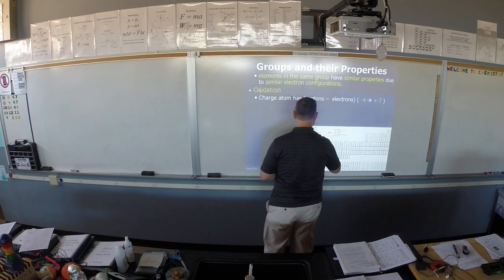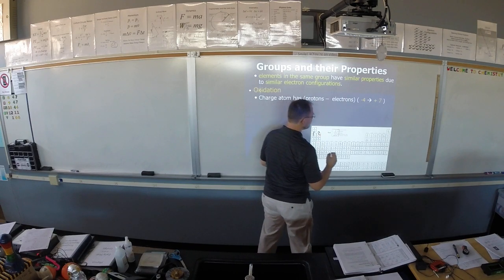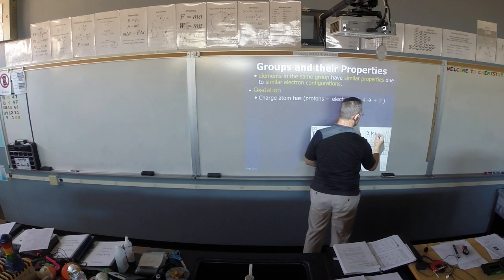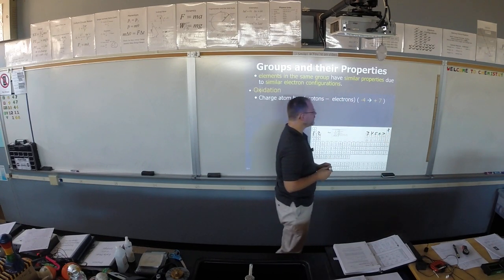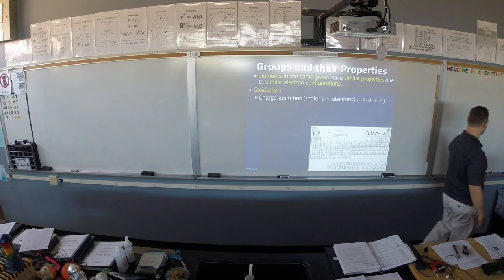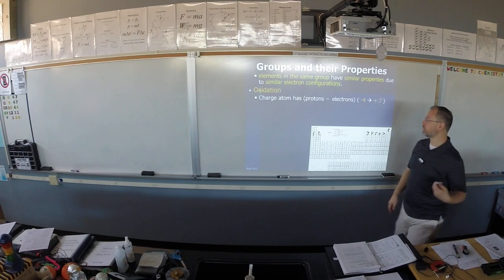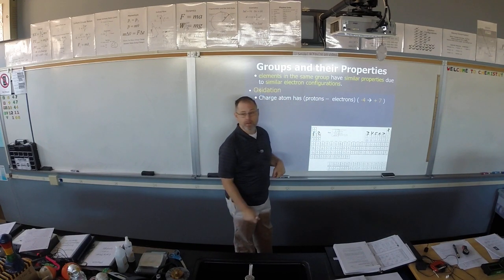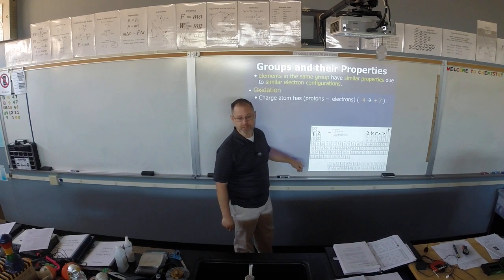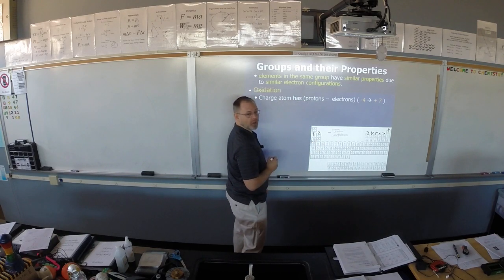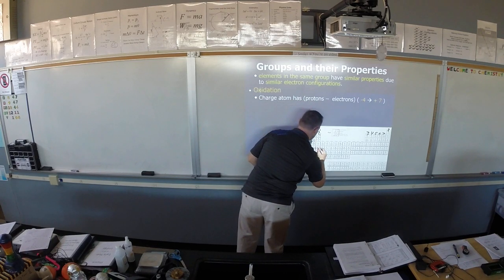Group one has one valence electron, group two has two, group 13 has three, group 14, 15, and the pattern continues. Based on the number of valence electrons and what an atom is going to do to complete its octet, we can come up with the oxidation charge. If group one has one valence electron and it gets rid of it, what is its oxidation number? Plus one. So all of group one is going to be plus one. All of group two will be plus two.